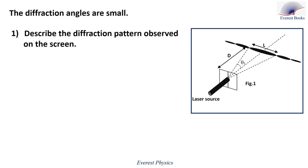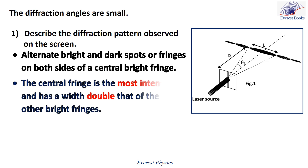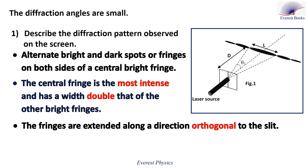Number one: describe the diffraction pattern observed on the screen. On the screen, we observe alternating bright and dark spots or fringes on both sides of a central bright fringe. The central fringe is the most intense and has a width double that of the other bright fringes. The fringes are extended along a direction orthogonal to the slit.